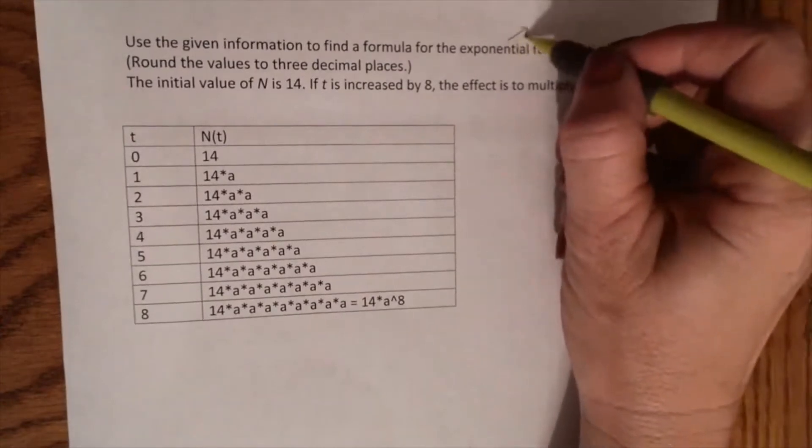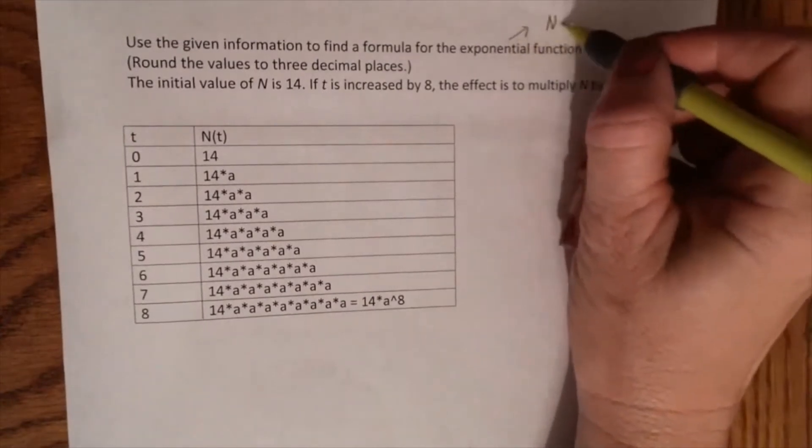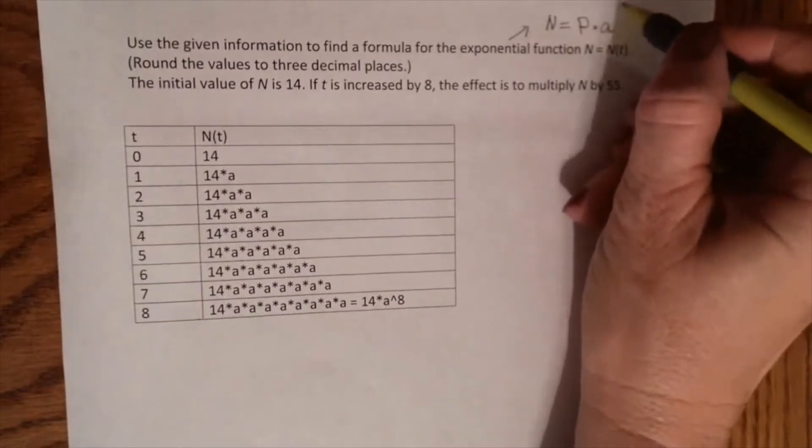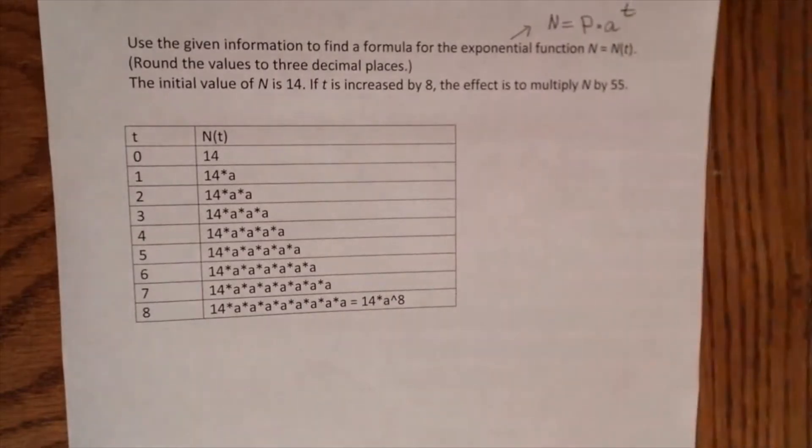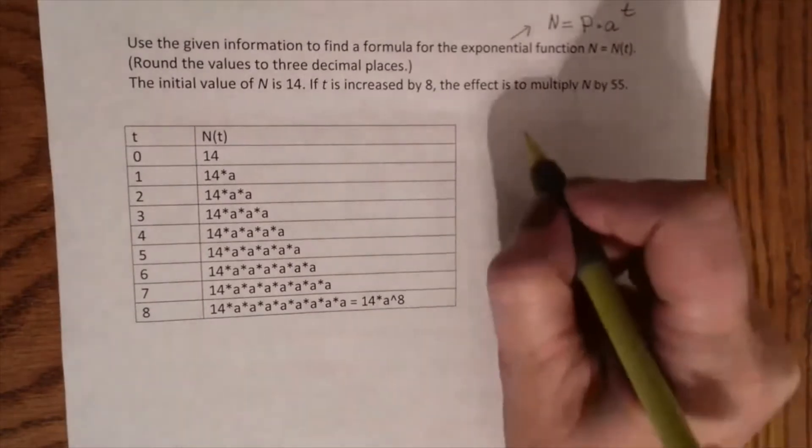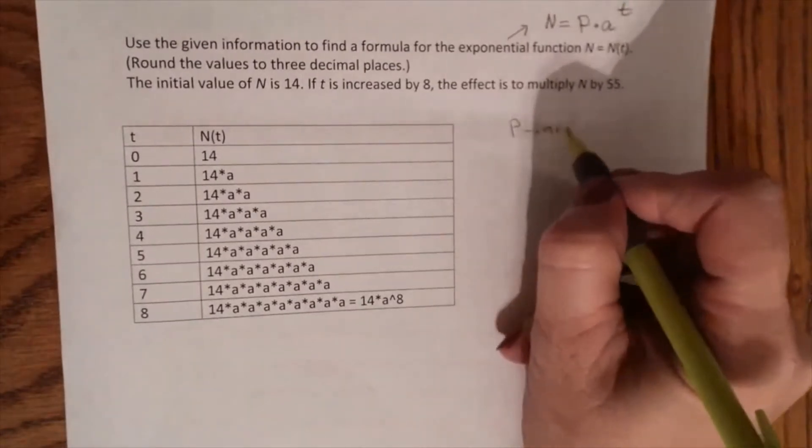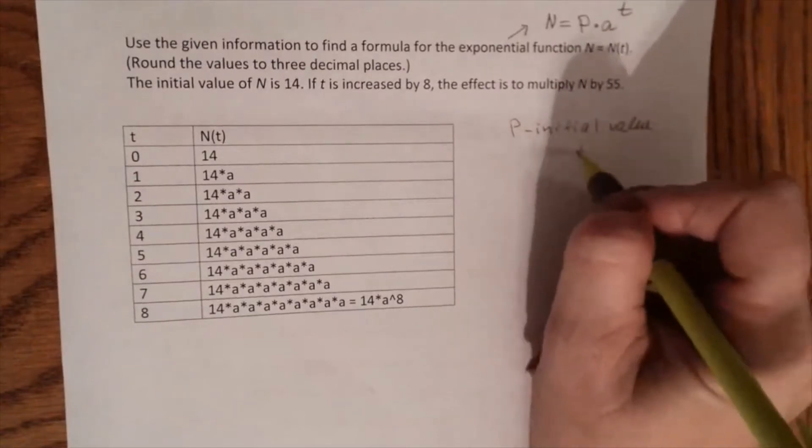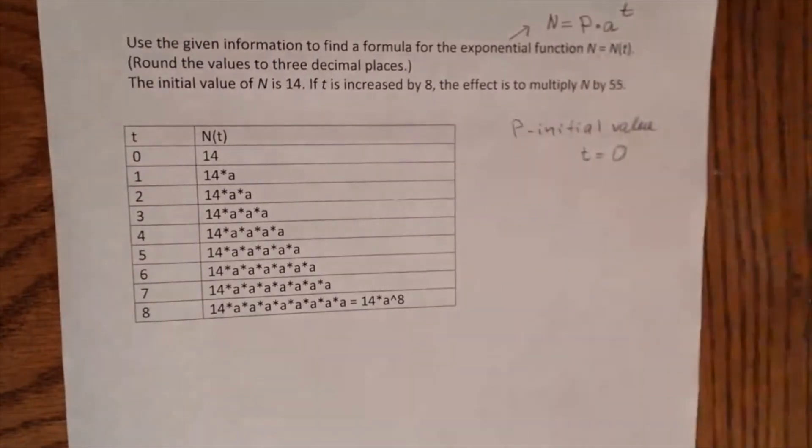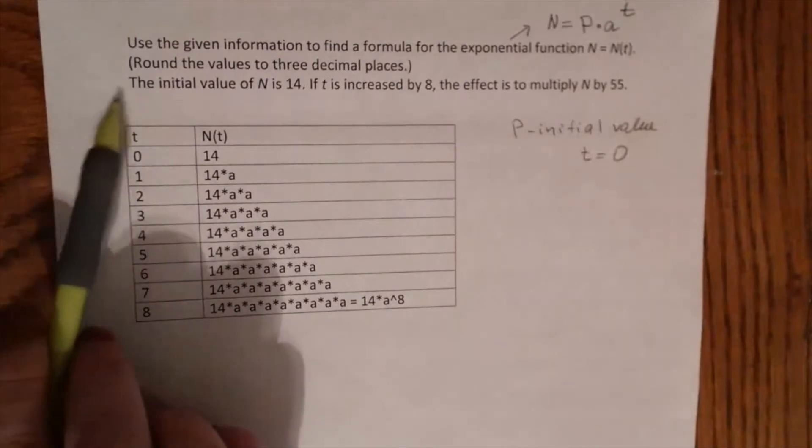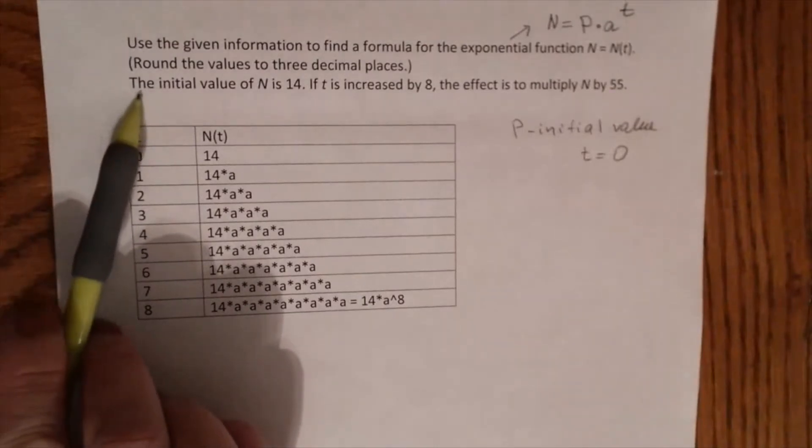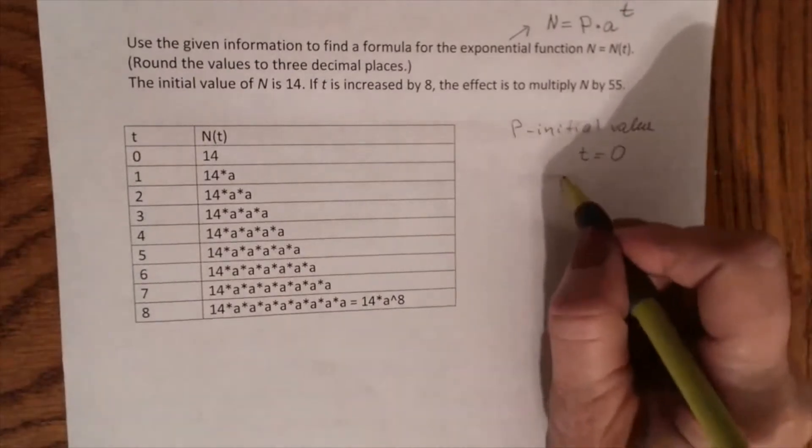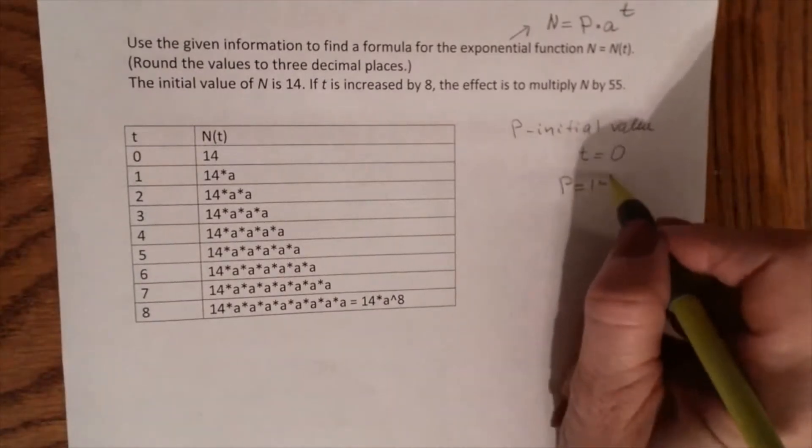For the exponential function, the formula is N equals P times a to the t power. P is the initial value when t equals 0, and it's given to us that the initial value N is 14. It means P equals 14.